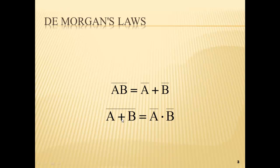Same thing with (A OR B)-not: break the line, change the sign, so OR becomes AND, giving A-not AND B-not. Break the line and change the sign directly underneath where you broke the line — nowhere else.